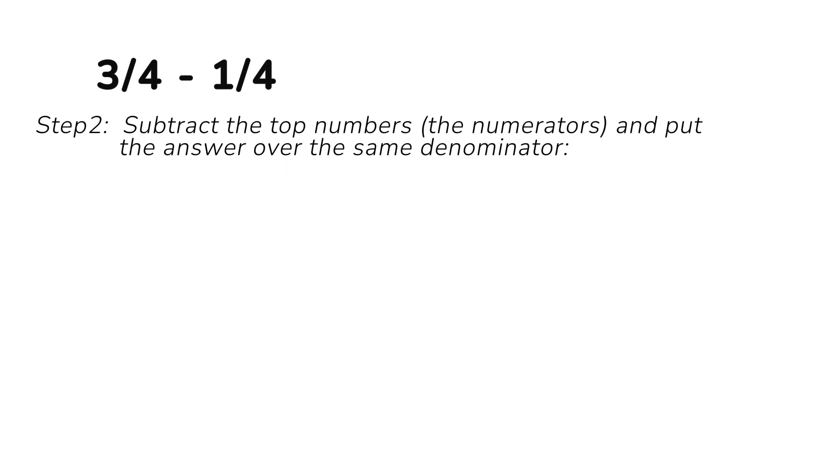Let's follow the simple steps we learned earlier. Step one: The bottom numbers, the denominators, are already the same, so let's go straight to step two. Step two: Subtract the top numbers, the numerators, and put the answer over the same denominator.